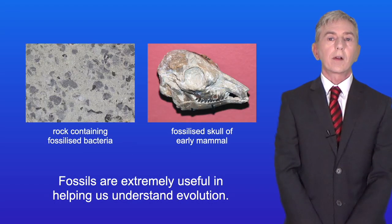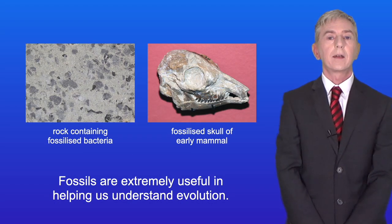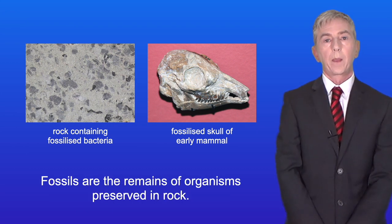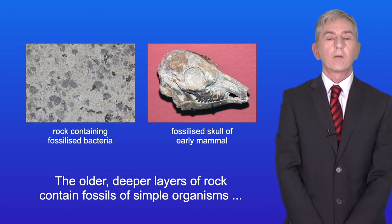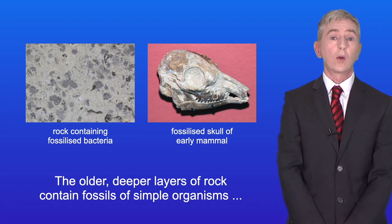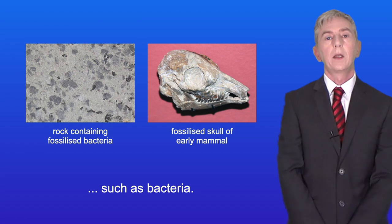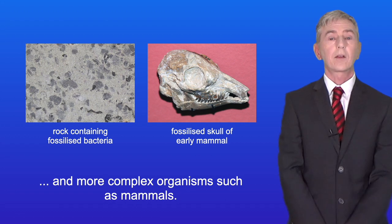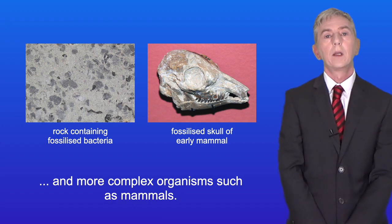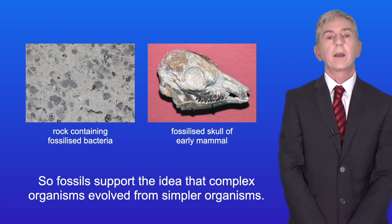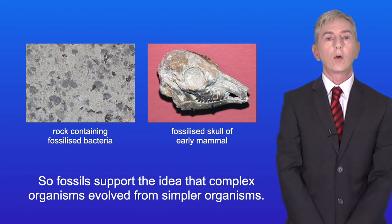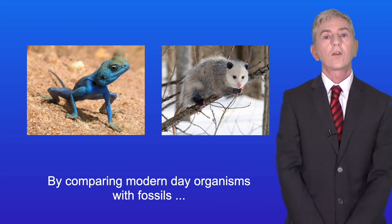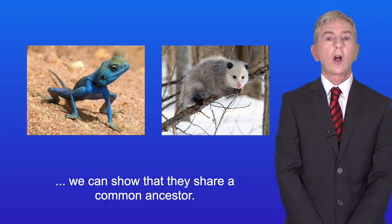Fossils are extremely useful in helping us understand evolution. Fossils are the remains of organisms preserved in rock. The older, deeper layers of rock contain fossils of simple organisms such as bacteria, whereas younger rock near the surface contains fossils of more recent and more complex organisms such as mammals. So fossils support the idea that complex organisms evolved from simpler organisms. By comparing modern day organisms with fossils, we can show that they share a common ancestor.